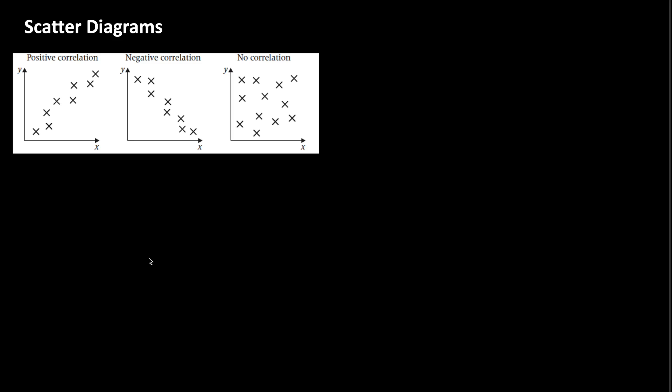In GCSE, you have studied three correlations: positive correlation, negative correlation, and no correlation. Note that positive correlation and negative correlation are linear. This means that they can form a straight line.